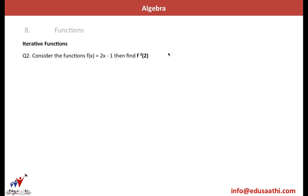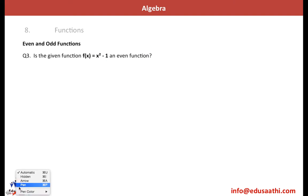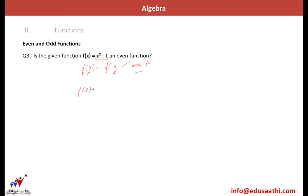Let's move to the third question: is the function x² − 1 an even function? For an even function, f(x) = f(−x). Taking x = 2: f(2) = 4 − 1 = 3. And f(−2) = (−2)² − 1 = 4 − 1 = 3. Since f(2) = f(−2), that means f(x) = f(−x), confirming it is an even function. Yes, it is an even function.